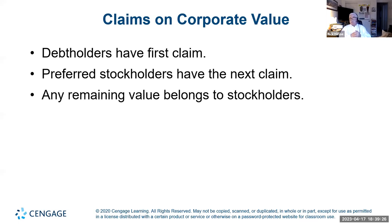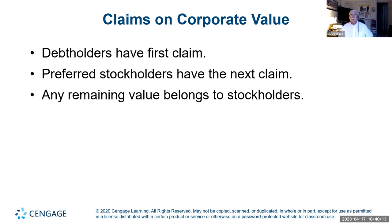Who has the claims on corporate value — in bankruptcy or if you want to sell the company, who gets paid first? If you've lent the company money, you get paid first: bondholders, banks, even vendors — anybody you owe money to gets settled first. If you have any preferred stock, they get paid next. Finally, the common stockholders get whatever's left over. That's why it's in your interest as a stockholder to pick companies that are ongoing and have no chance of closing or being taken over.